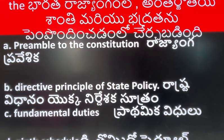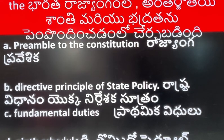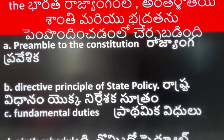First one: in the Constitution of India, promotion of international peace and security is included in which part? A. Preamble to the constitution. B. Directive Principles of State Policy. C. Fundamental Duties. D. Ninth Schedule. The answer is B, Directive Principles of State Policy.